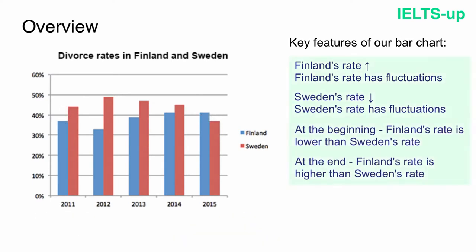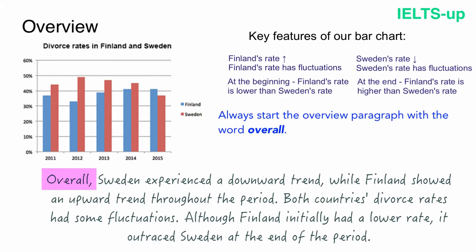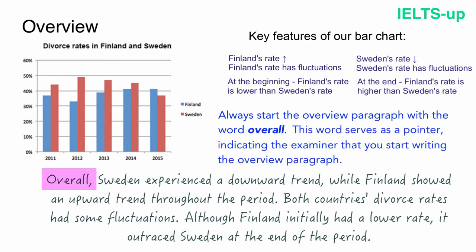Here is how I wrote the overview: 'Overall, Sweden experienced a downward trend, while Finland showed an upward trend throughout the period. Both countries' divorce rates had some fluctuations. Although Finland initially had a lower rate, it outraced Sweden at the end of the period.' Always start the overview paragraph with the word 'overall' — it signals to the examiner that you are writing the overview paragraph.